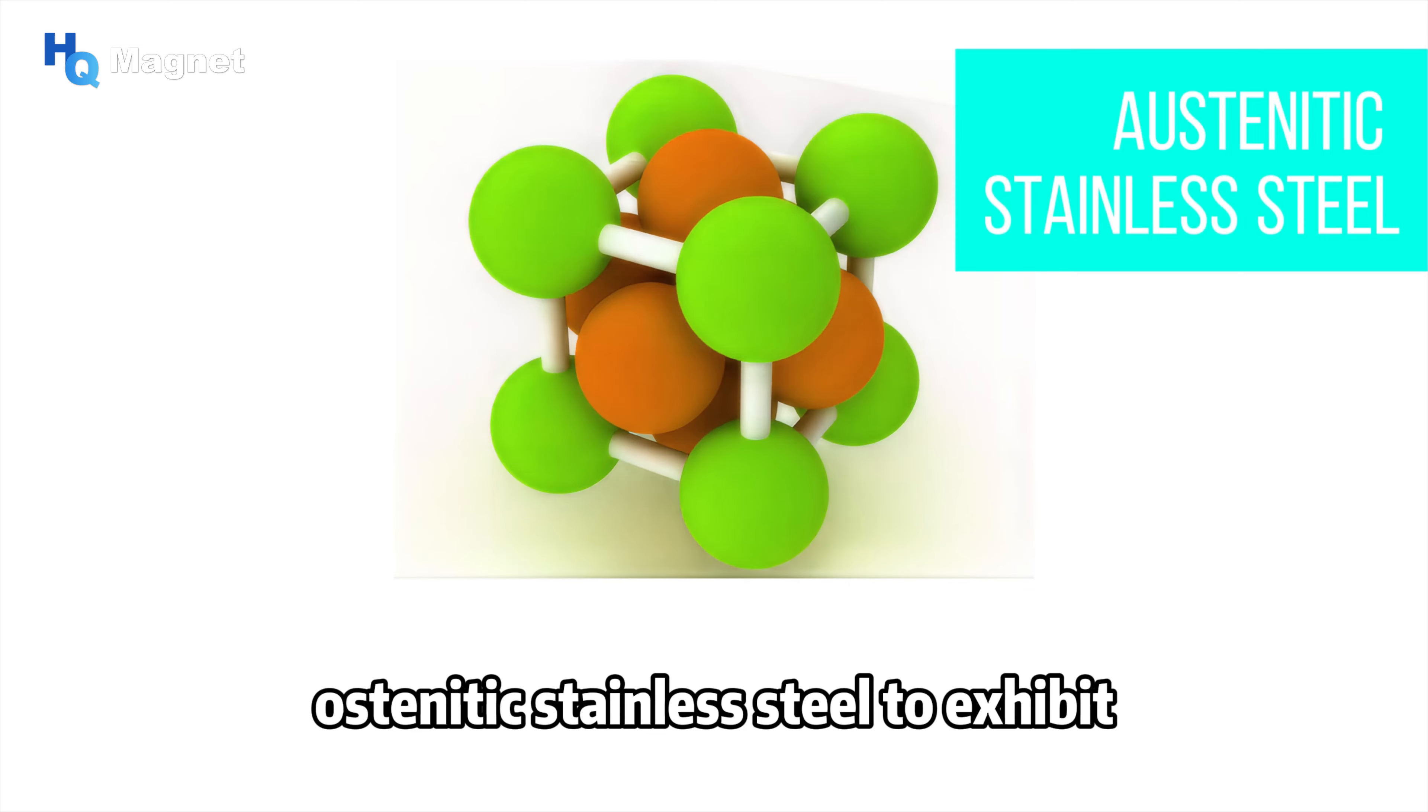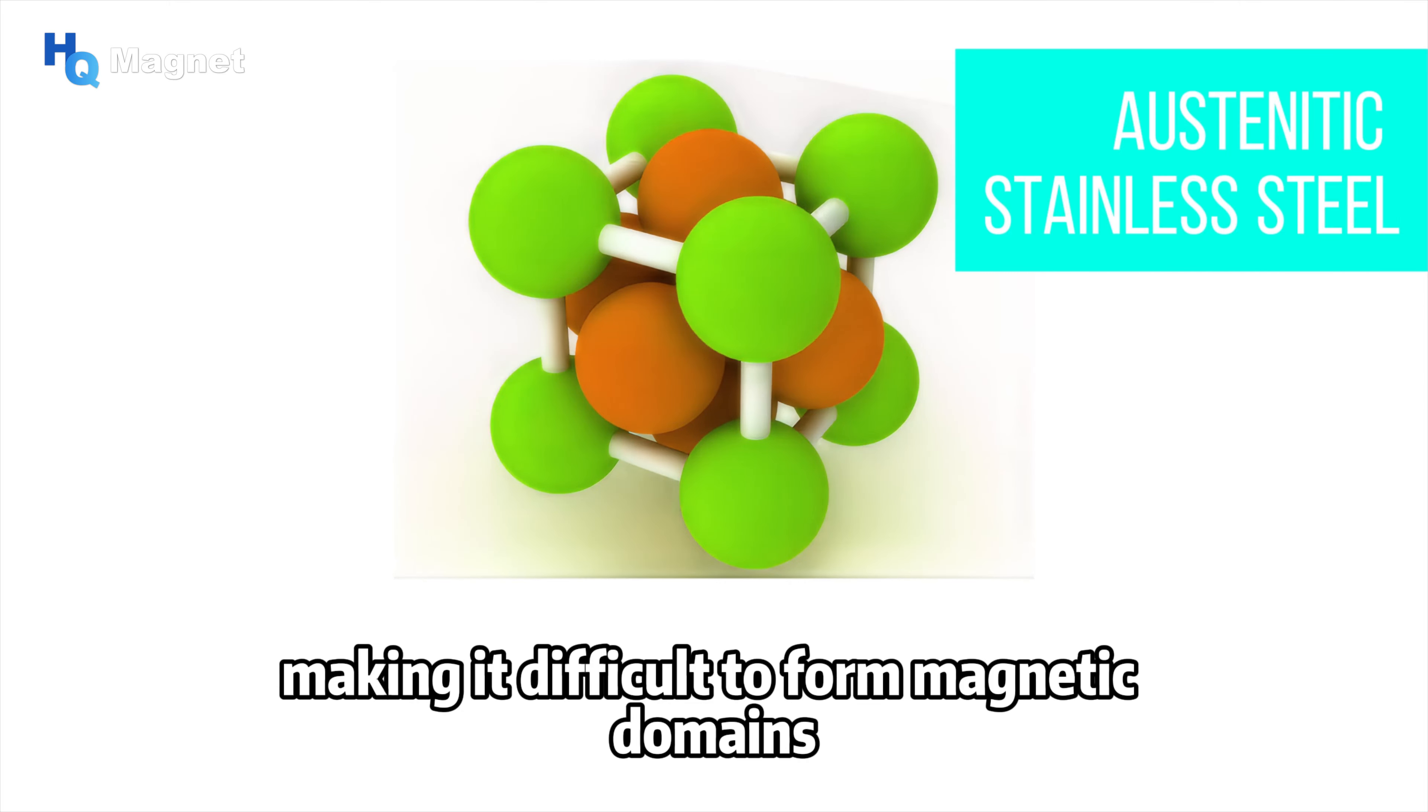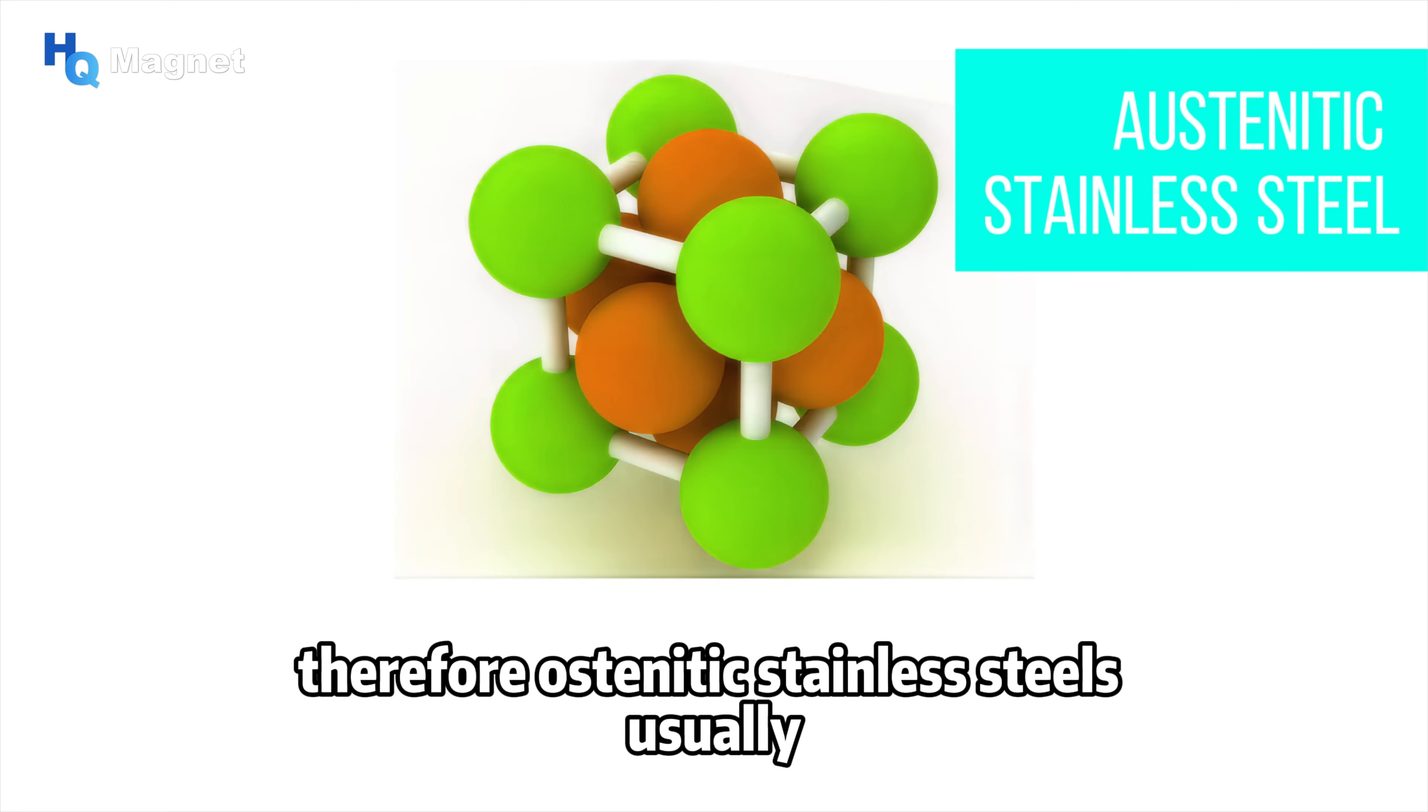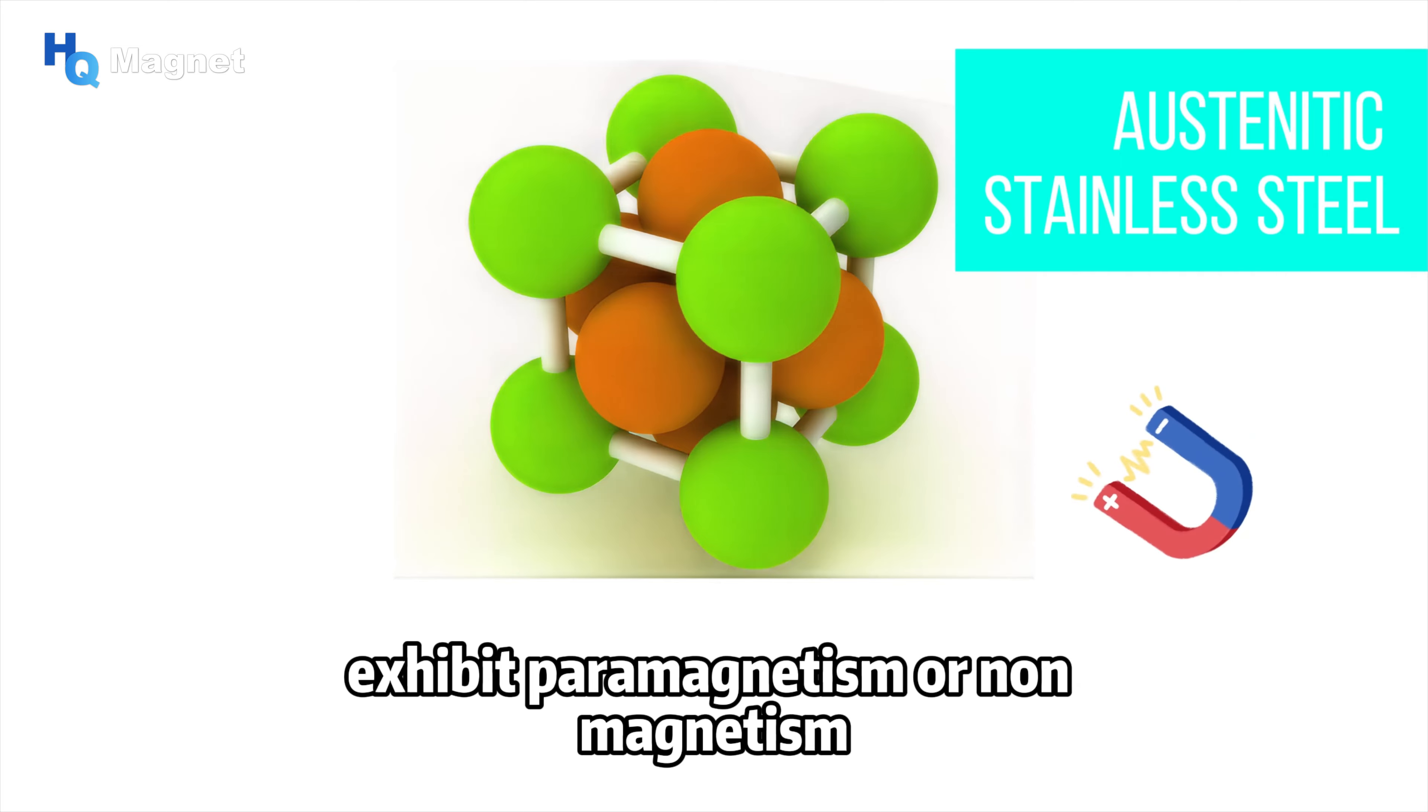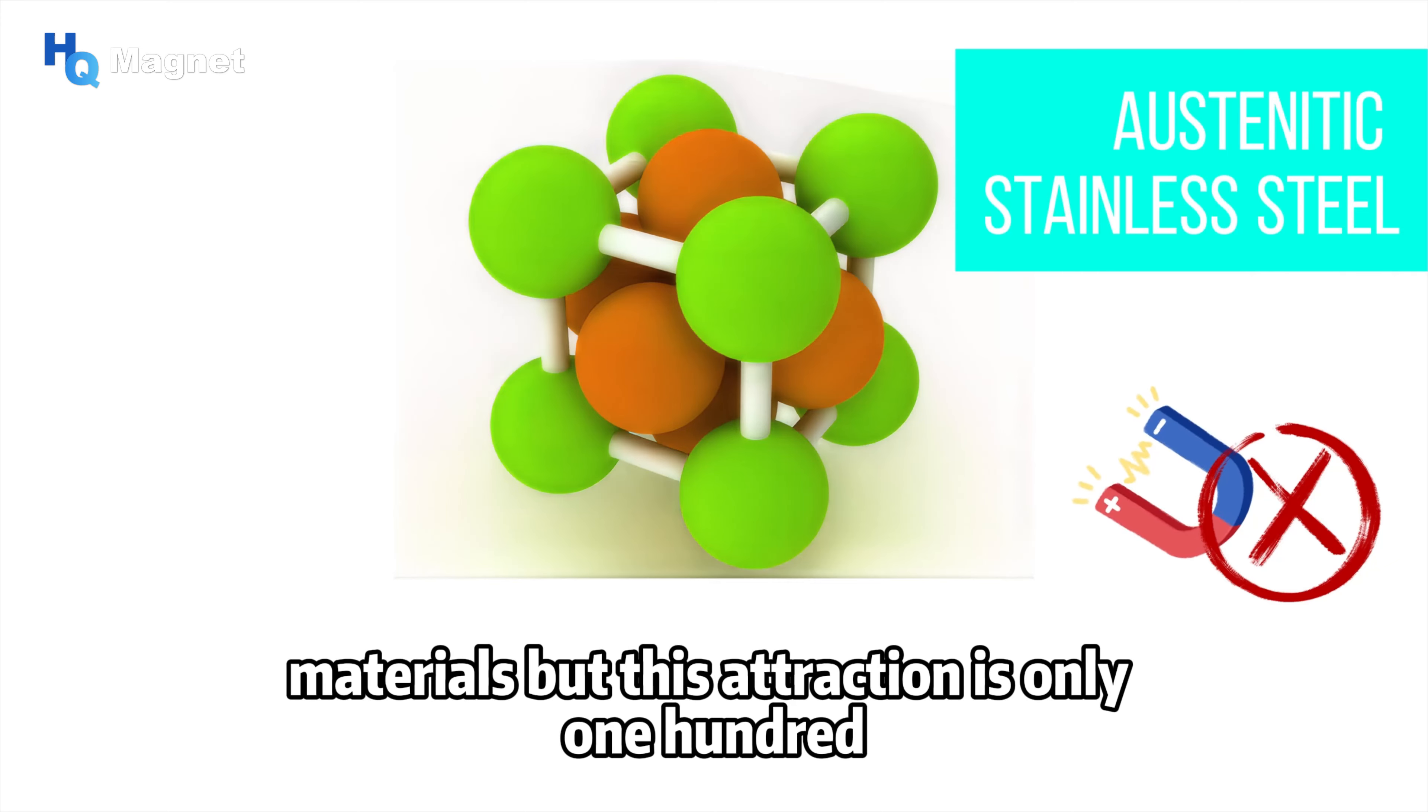However, the face-centered cubic structure makes the magnetic moment interaction between iron atoms weaker, making it difficult to form magnetic domains. Therefore, austenitic stainless steels usually exhibit paramagnetism or non-magnetism. Magnets will have a weak attraction on paramagnetic materials, but this attraction is only one hundred thousandth of that of ferromagnetic materials and can only be measured with precision instruments.